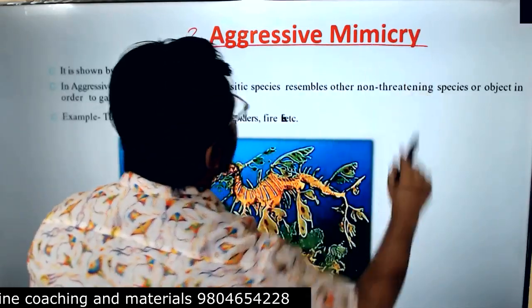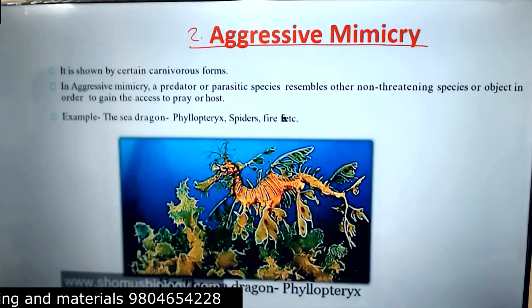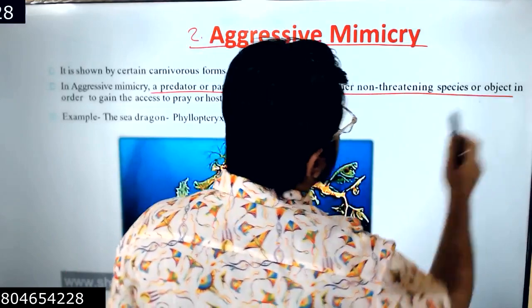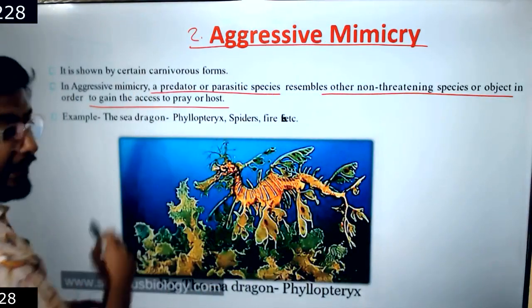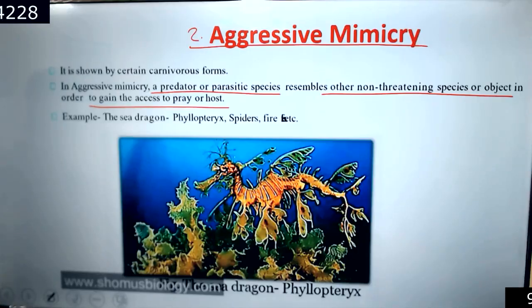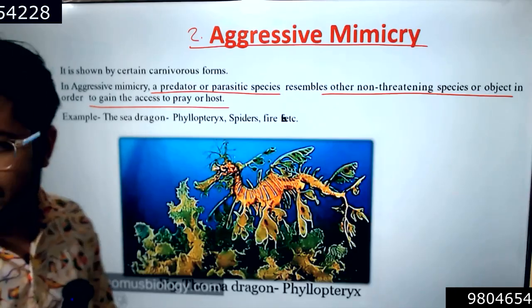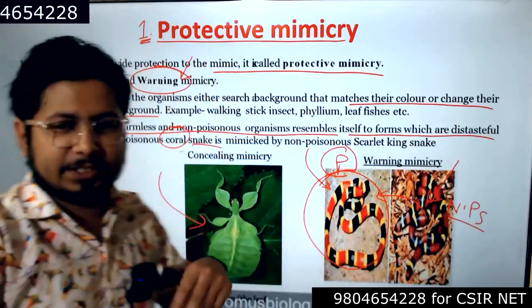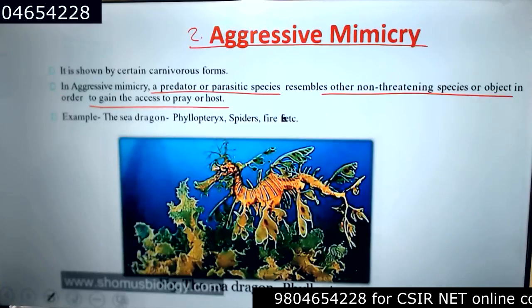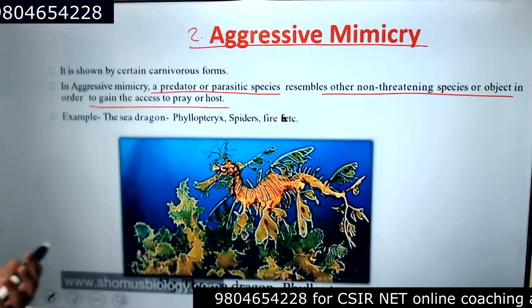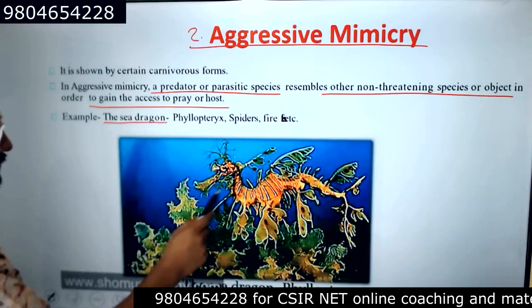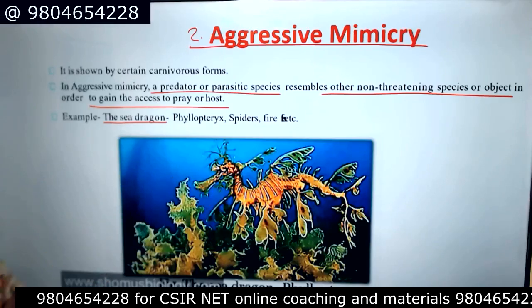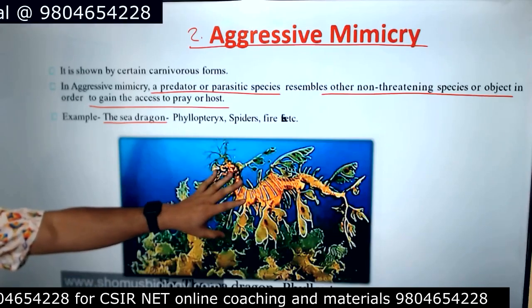The second main type is aggressive mimicry, shown by certain carnivorous forms only. A predator or parasite species resembles another non-threatening species or object in order to gain access to prey or a host. It shows friendly behavior to get entry and then eat the prey. For example, the sea dragon is very similar in structure to the seahorse and other relative species nearby, but it is carnivorous and eats other species.